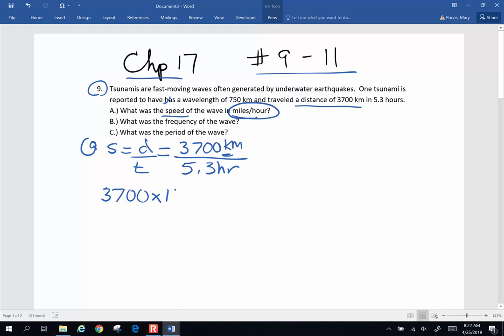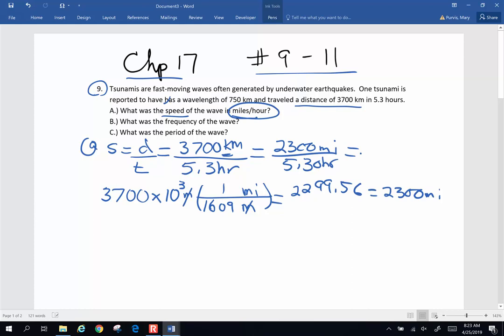Kilo is times 10 to the third meters, and I'm going to convert. I'm going to get rid of meters, go to miles. I know there are 1,609 meters in a mile. So I'm going to pick up my calculator. 3,700 times 10 to the third divided by 1,609, I end up with 2,299.56. I'm going to round that off to 2,300 miles is the displacement or distance. So 2,300 miles in 5.3 hours, divide that out and I get approximately 434 miles per hour. That is the answer to part A.